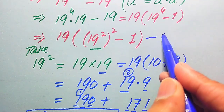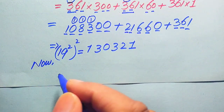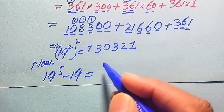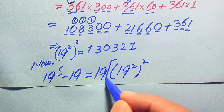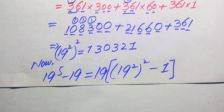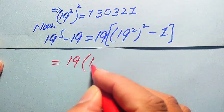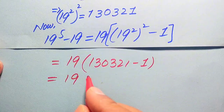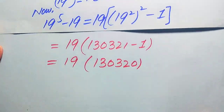We now move backward and substitute the value of (19²)² into our expression. Copying the expression: 19 to the power of 5 minus 19 equals 19 multiplied by ((19²)² minus 1). Substituting, this becomes 19 times (130321 minus 1), which equals 19 times 130320.